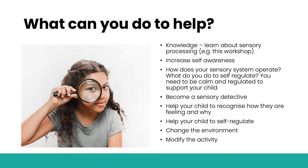So what can you do to help if your child has sensory processing difficulties? The first thing is to increase your knowledge — which is why you're here. The next step is to increase your self-awareness of how you and your child process sensory information. It's important to understand how your own sensory system operates. What do you do to feel regulated — find a quiet space, have a hot drink, go for a run, or turn music up and dance? If you want to support your child to feel regulated, you need to be calm and regulated yourself.